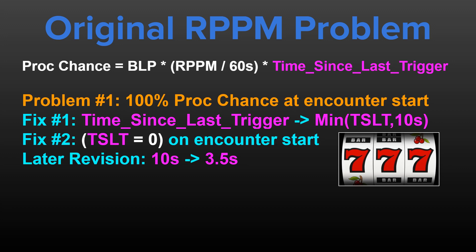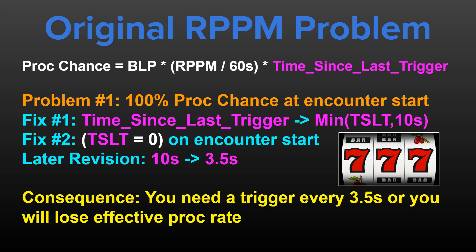This second correction has some problematic aspects, however, because it meant that if you didn't have a valid trigger at least once every 3.5 seconds, you are now losing out on potential proc rate for a given effect, which starts to cause some complications with a number of triggers and procs.